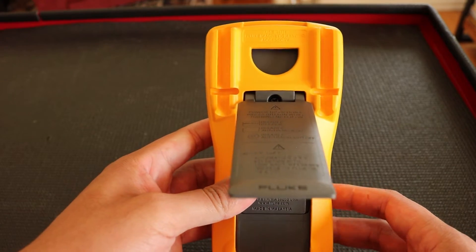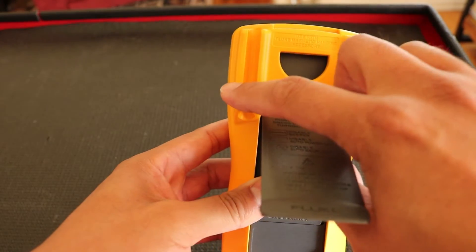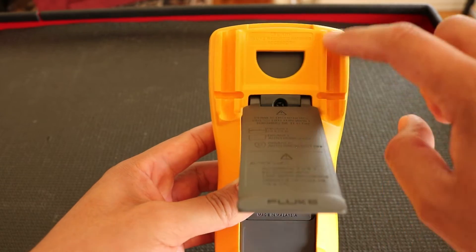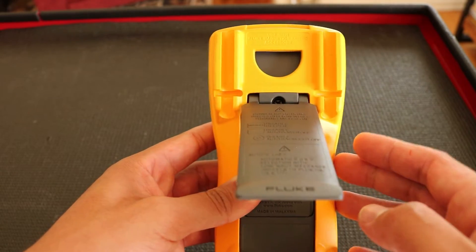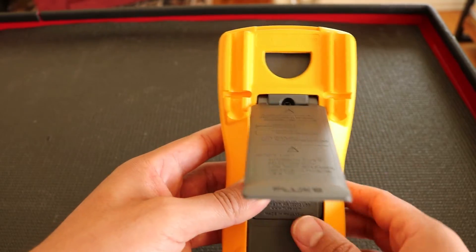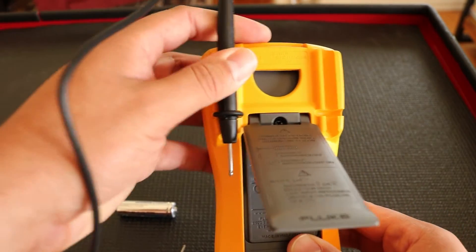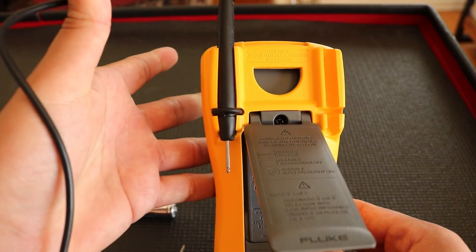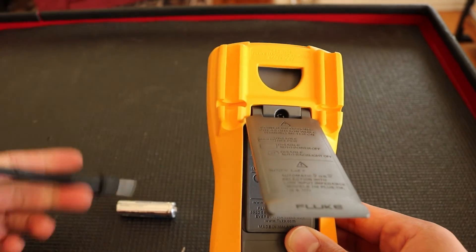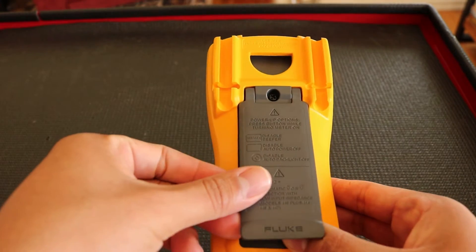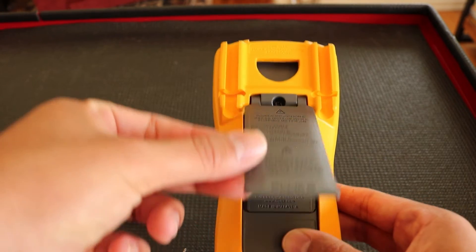As we turn this multimeter to the back, we have what looks like cutouts or specific moldings on the back of the multimeter. This is where you could store your multimeter leads to keep them nice and secure and you don't get them lost.